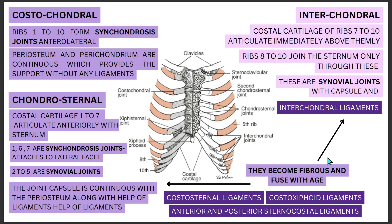To summarize: we covered the costochondral joint, which articulates between the rib and cartilage; the chondrosternal joint, which articulates between the cartilage and the sternum; and the interchondral joint, where the articulation is between the cartilages joining the ribs. That's all for today — thank you for watching.